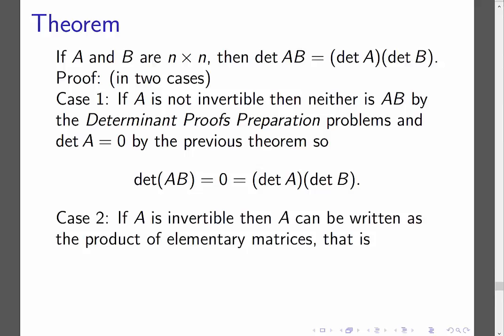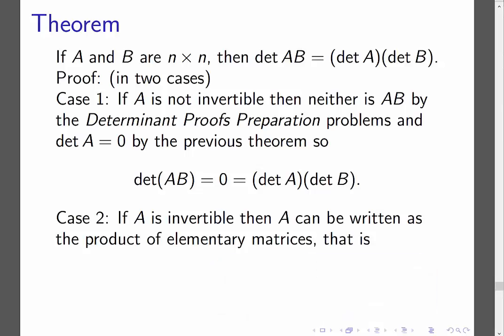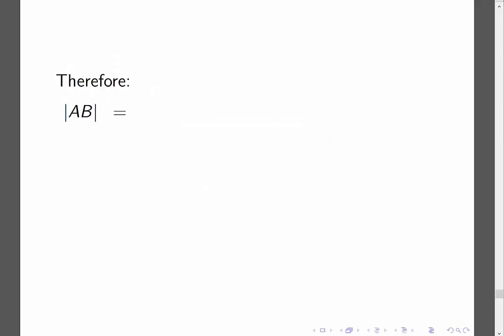Case two is going to take a little more work. If A is invertible, then what we saw in video number two is that A can be written as a product of elementary matrices — that is, A equals E1 times E2 up to EP, elementary matrices corresponding to row operations done on the identity matrix. We just need to know that A is a product of elementary matrices. Starting with det(AB), I substitute A with this product of elementary matrices.